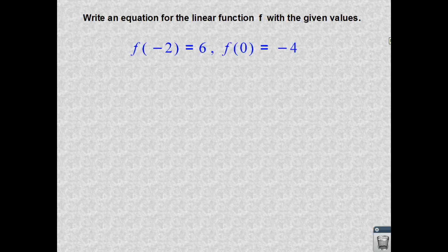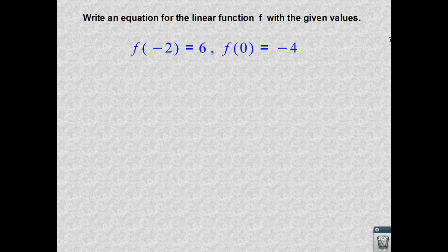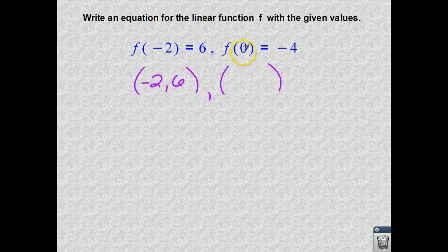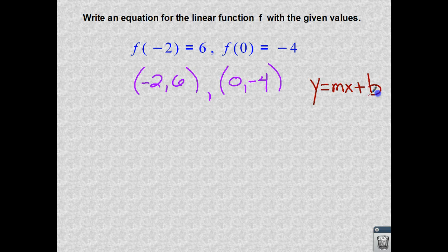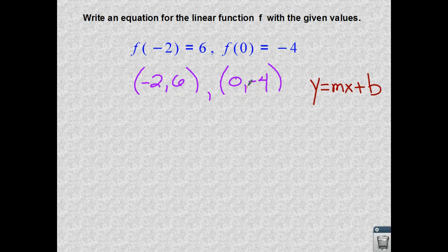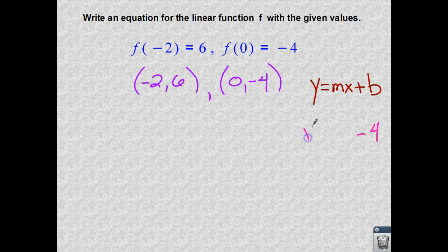Okay, last one. Write an equation for the linear function f with the given value. So we've talked about our function notation of f of x equaling y. So we know that we have two ordered pairs here named negative 2, 6 and 0, negative 4. And again, we're going into this slope-intercept form. Anything jump out at you right away?